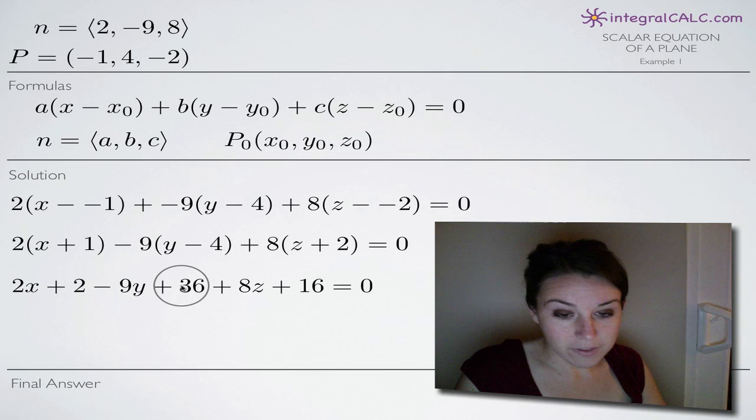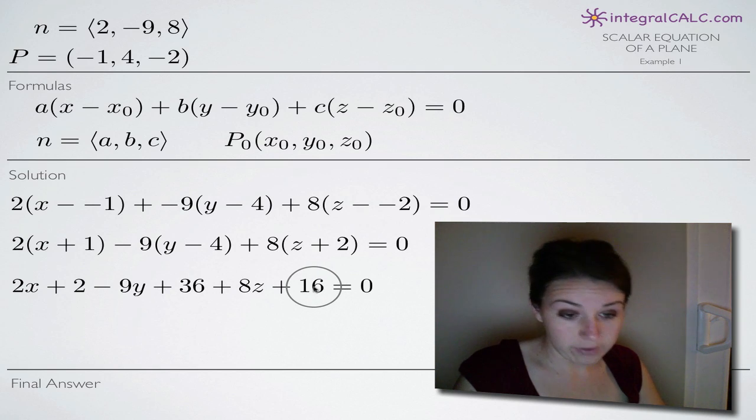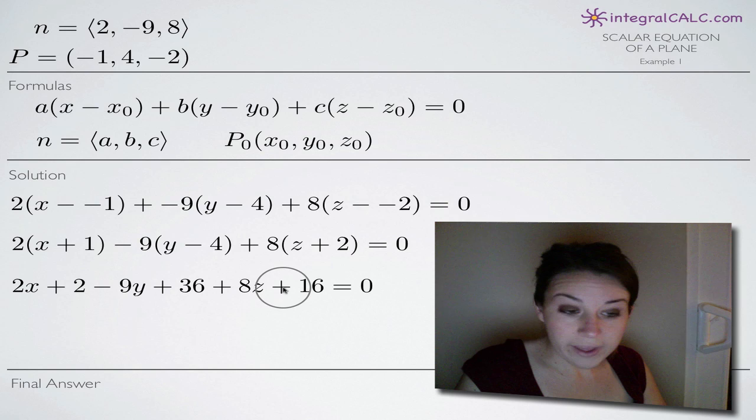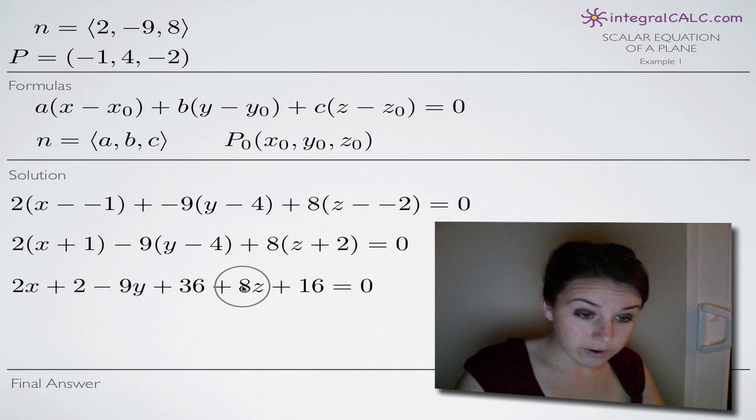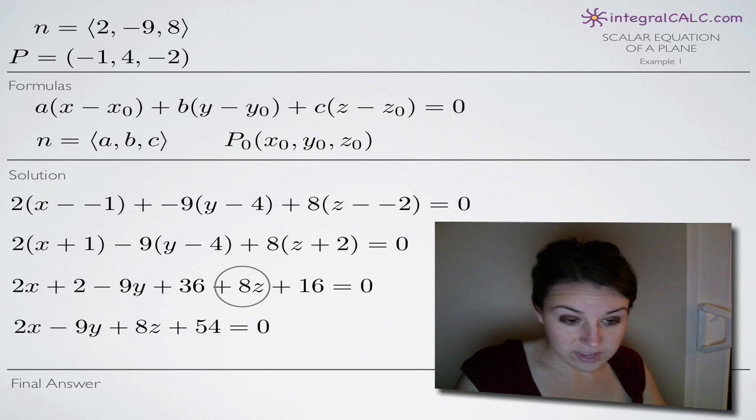Because we'll have these constants here, the +2, +36, and +16 that will combine into one constant. So once we do that, we have an x, y, and z term.